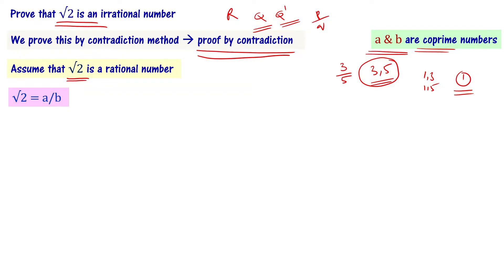A and B will have only the number 1 as their common factor. Please note this — this is a very important point. A and B are co-prime numbers, meaning they share only 1 as a common factor.